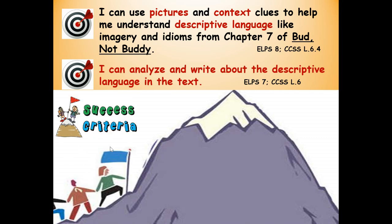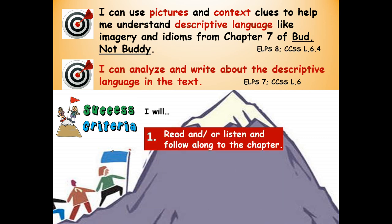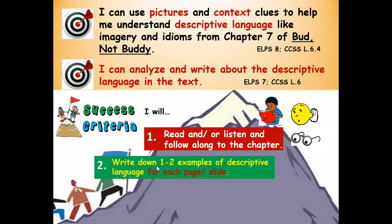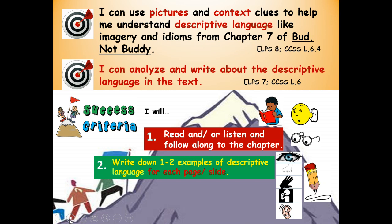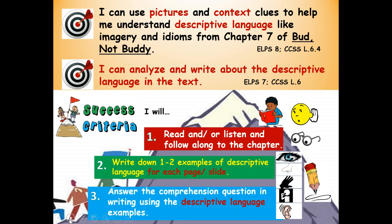Success criteria — that means how will you know you're successful at reaching these two learning targets? We're going to take it step by step. Number one, we're going to read and or listen and follow along to different parts of the chapter. Number two, for each slide, you're going to write down one or two examples of descriptive language. And then three, we're going to answer the comprehension question in writing using those descriptive language examples. By the time we get to the question, you will have already answered most of it.